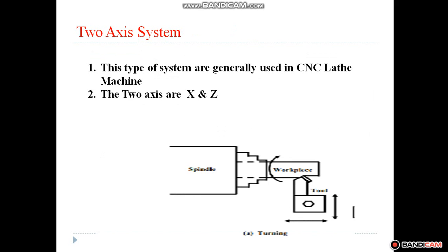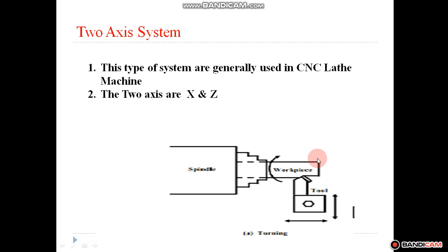Next is the two axis system. Two axis systems are generally CNC lathe machines in which the tool moves in two axes, that is x and z. The x movement refers to when the carriage is moving from one point to another, meaning the tool is moving parallel with respect to the workpiece. The z movement is the movement of the compound slide, that is movement in the perpendicular direction to the workpiece. So x provides the turning operation and z provides the facing operation.